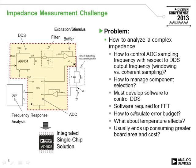To do this requires a direct digital synthesizer (DDS) for frequency generation, a filter, a buffer, a sense resistor to measure current through the network, an A/D converter for both voltage and current, and DSP for frequency analysis. All of this takes considerable hardware—but we have a single-chip solution, the AD5933, which does all of that in one chip.